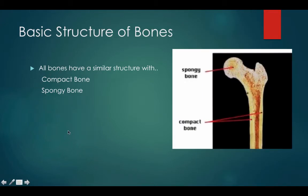Now let's talk about the basic structure of bones. All bones have a similar structure with compact and spongy bone. In long bones, spongy bone is located towards the ends of the bone and compact bone is located on the shaft. In short bones, spongy bone is located towards the center of the bone.